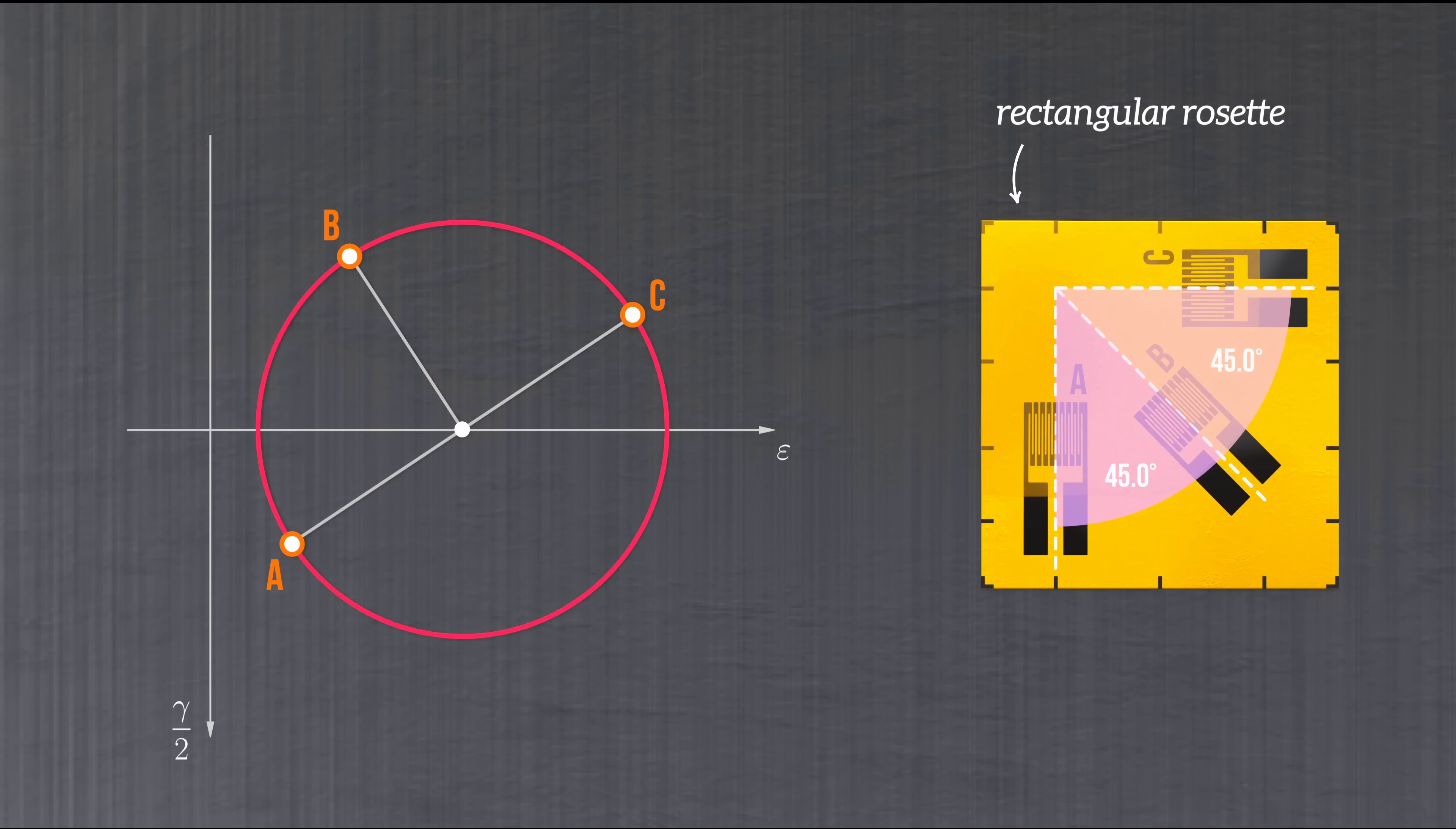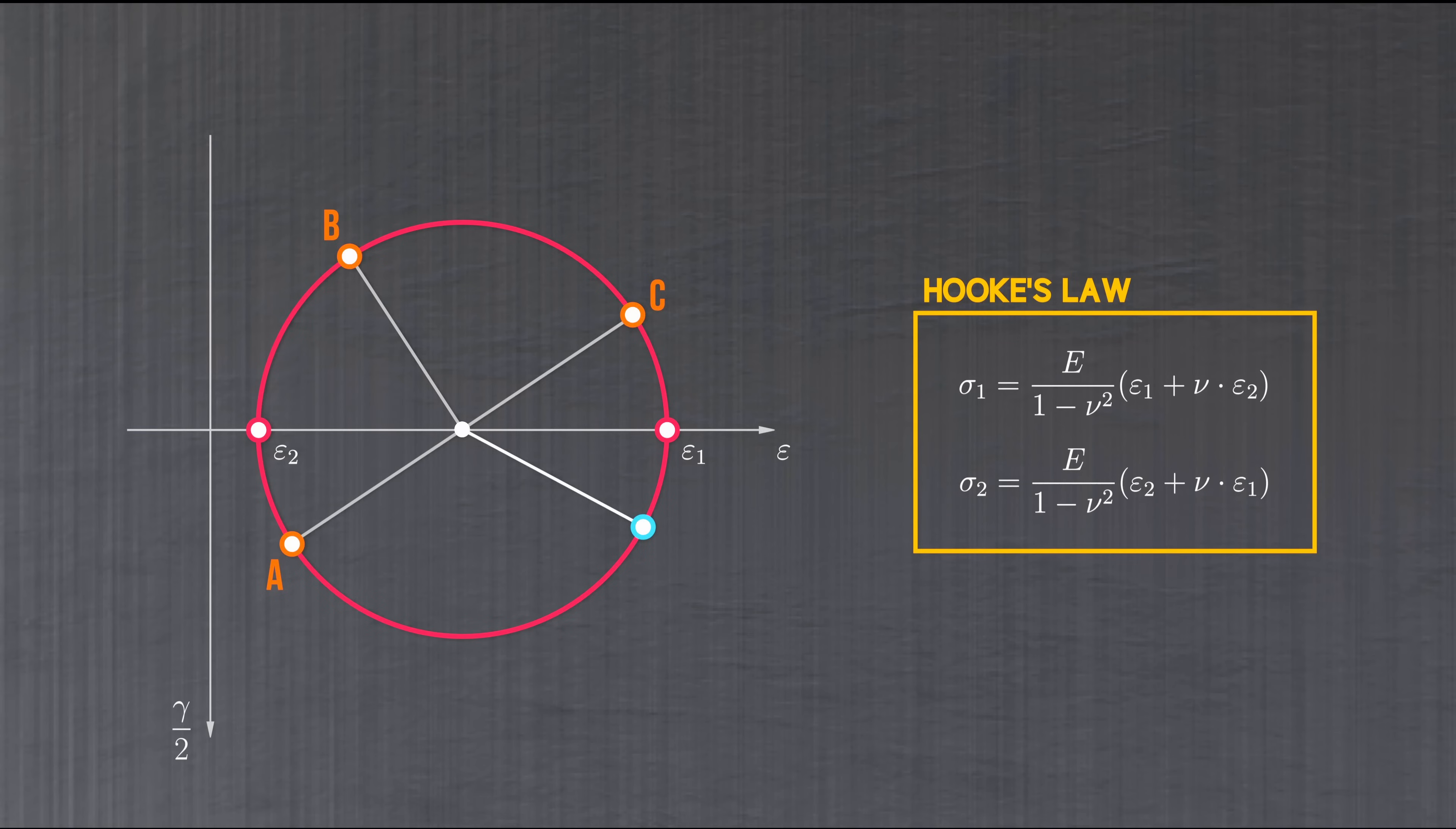Once Mohr's circle has been constructed, useful information, like the principal strains, or the strains in a particular direction, can easily be determined. And Hooke's law can be used to calculate the stress in the material.